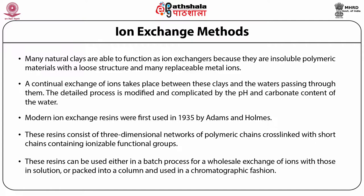Modern ion exchange resins were first used in 1935 by Adams and Holmes. These resins consist of a three-dimensional network of polymeric chains cross-linked with short chains containing ionizable functional groups. Thus, there is an insoluble phase with fixed ionic sites of one charge, while the oppositely charged species are free to move about in the solvent and be replaced by other ions of like charge, provided that electroneutrality is maintained. These resins can be used either in a batch process for a wholesale exchange of ions with those in solution, or packed into a column and used in chromatographic fashion. They have proven invaluable in the separation of ionic substances with closely similar chemical behaviour.